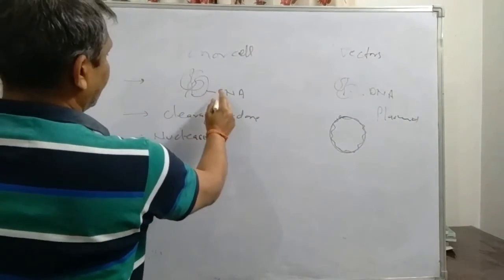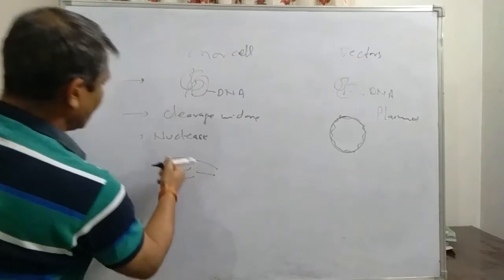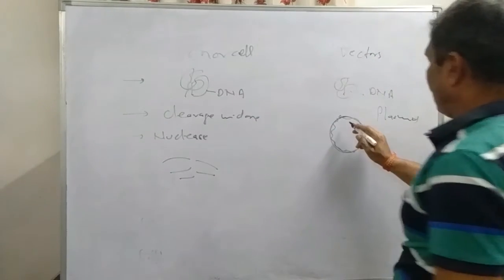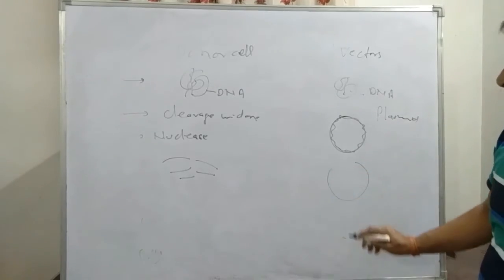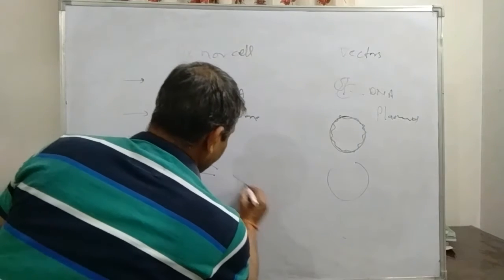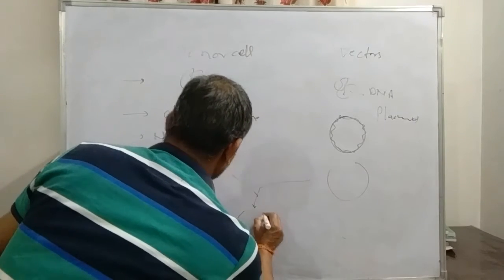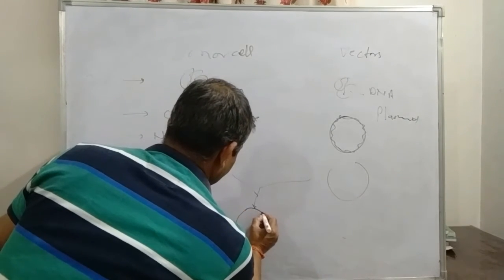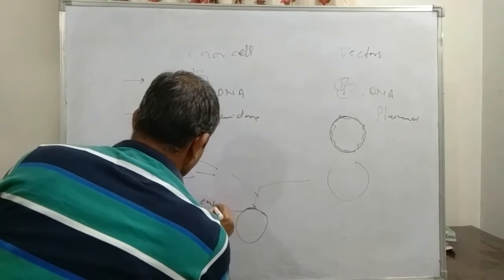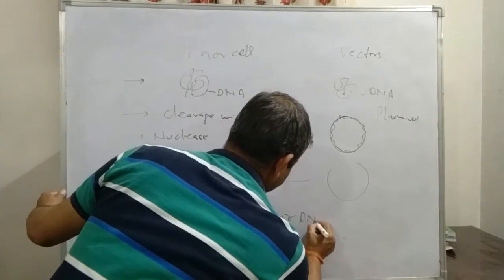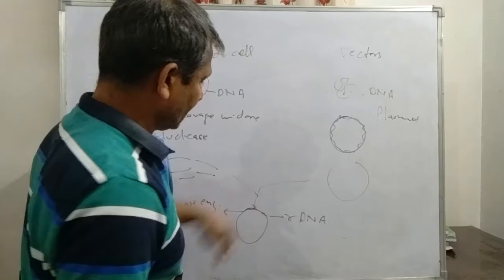So we cut the DNA of the donor cell into pieces. These are the fragments, with the help of the restriction enzymes. And similarly, a cut is made in this plasmid also. And now this is united. This piece is shifted, this piece is shifted here with the help of the ligase enzyme. It is now recombinant DNA, formed by the union of the DNA of the donor cell and vector cell.